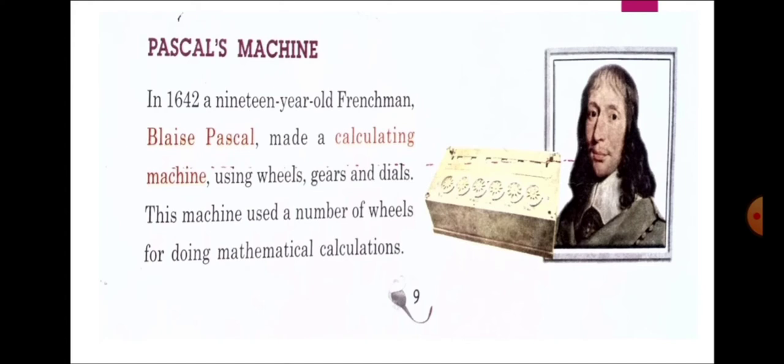Pascal's machine was invented by the 19-year-old Frenchman Blaise Pascal. It consisted of a box with movable gears and dials that could add, subtract, multiply, and divide numbers easily.